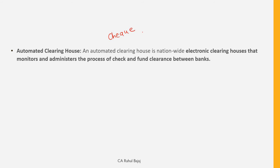Now, when someone deposits a check from one bank into another bank — for example, you are in HDFC Bank and your party is in Axis Bank — the check needs to be cleared. Previously, this clearing was done manually: bank representatives would meet at 2 PM and 5 PM, collect at one place, and verify balances to clear checks. Banks would come together and clear all checks, verifying whether each account had sufficient balance.